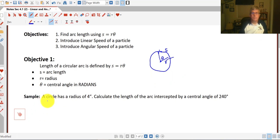So a sample problem: a circle has a radius of four inches, so that's our r. Calculate the length of the arc intercepted by a central angle of 240 degrees. So the length of the arc, we want to calculate s, intercepted by a central angle of 240 degrees.